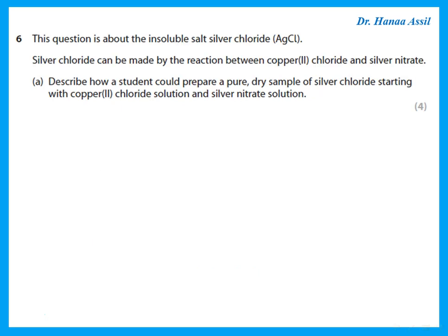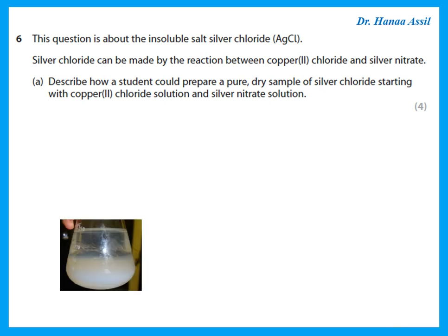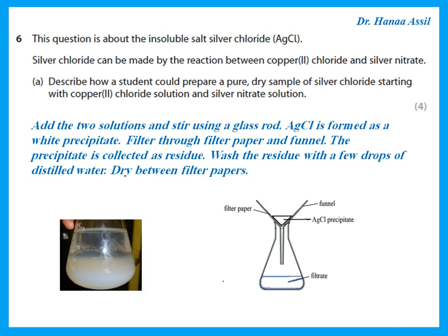This question is about insoluble salt. Silver chloride can be made by reacting copper chloride and silver nitrate solutions. To prepare a pure dry sample: add the two solutions together and stir with a glass rod — silver chloride forms as a white precipitate. Filter through filter paper and funnel, collect the precipitate as residue, wash the residue with a few drops of distilled water, and dry between filter papers.